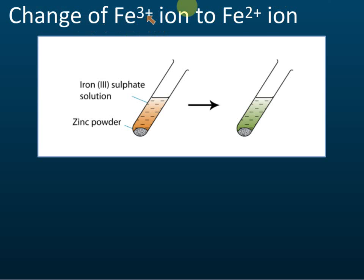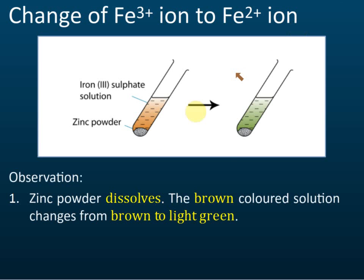Now this is iron 3 to iron 2 reduction. The color change is from brown to green — brown color to green color. This time we use zinc powder as the reducing agent. Observations: we can see that the zinc powder dissolves in the solution, and the brown color of the solution turns green. Brown color is iron 3 ion; green is iron 2 ion.